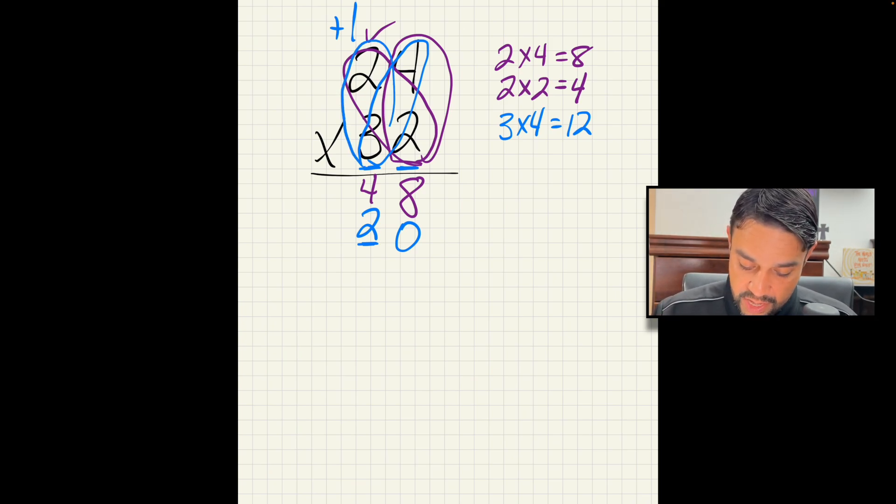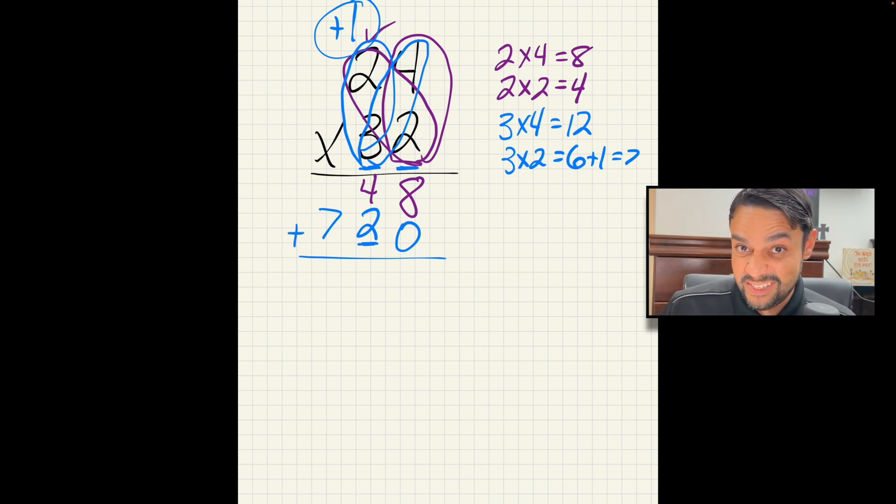Now we have 3 times 2, which is 6. But don't forget your 1. Remember, math is like Jenga. You forget one thing, make one mistake, the whole thing is wrong. So, plus 1 equals 7. Now we have 7. Now don't forget, we're always putting things together in multiplication to get our total. So we're going to be adding.